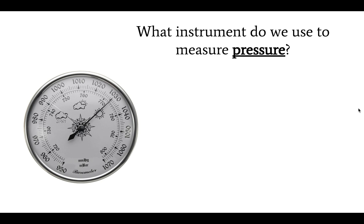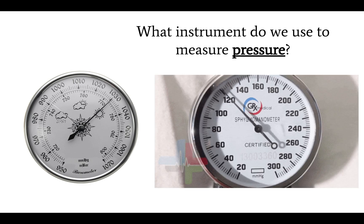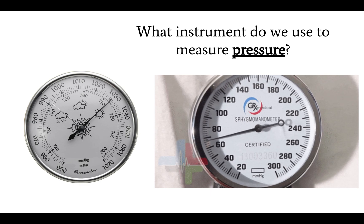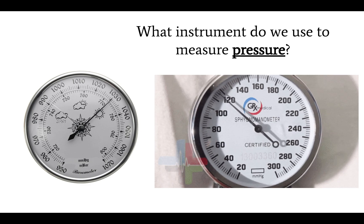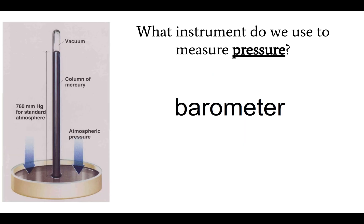What instrument do we use to measure pressure? The name of this instrument is a barometer. As you can see, it kind of looks like the dial that you have when you get your blood pressure taken. But whereas the instrument on the right measures blood pressure, the instrument on the left measures air pressure. A barometer can also look like a long column filled with mercury — the pressure will push down on that pool of mercury on the bottom, causing the column of mercury to rise.